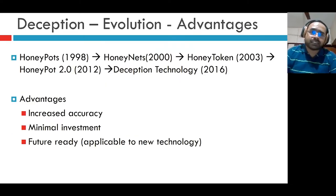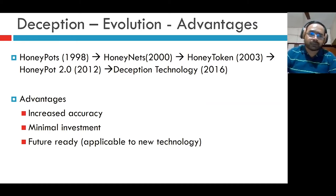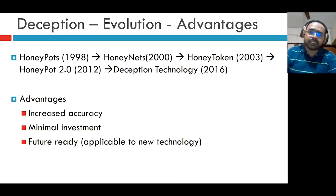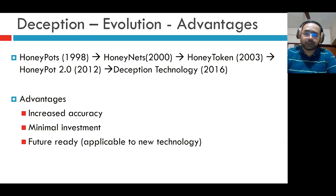The history of deception technology starts with the introduction of honeypots in 1998. Honeypots are small traps placed in the network. When an attacker tries to access those points, he falls in the trap and it raises an alarm and provides information to the system administrator. Honey nets are networks of honeypots, introduced in 2000. A honey token is a small piece of information embedded in real information. When somebody steals the real information, it sends an alert message to the system administrator indicating what information has been stolen.